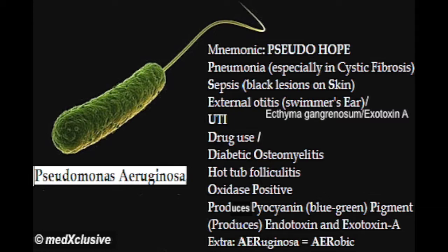S stands for sepsis, and also reminds us of skin lesions that Pseudomonas can cause. E reminds us that Pseudomonas causes external otitis and ecthyma gangrenosum. N — it produces exotoxin A. U stands for UTI infection that it can cause.